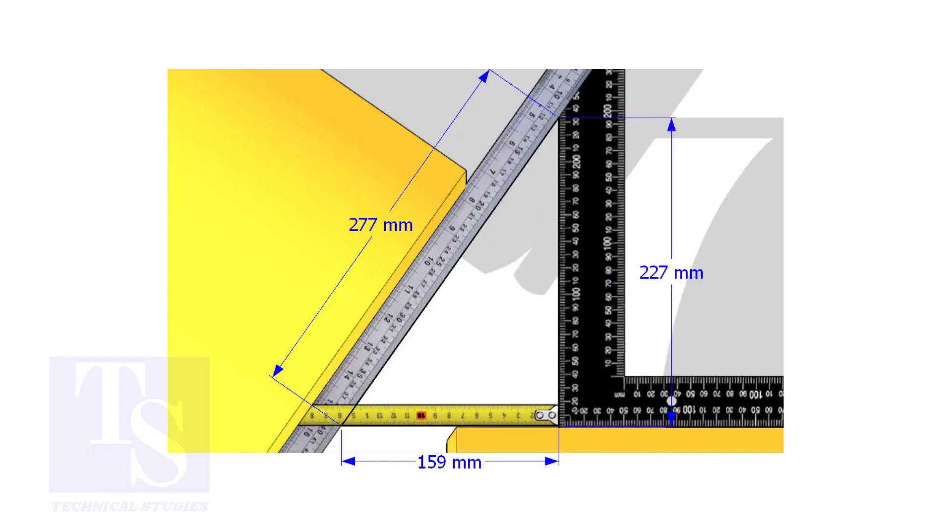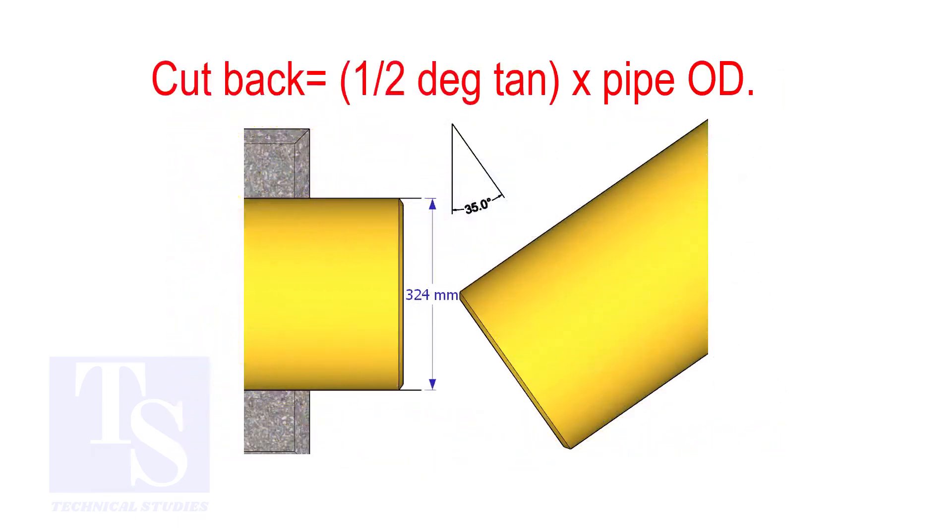How to calculate the cutback of a single cut miter. When it is a single cut, the cutback is half degree tan multiplied by the OD of the pipe.